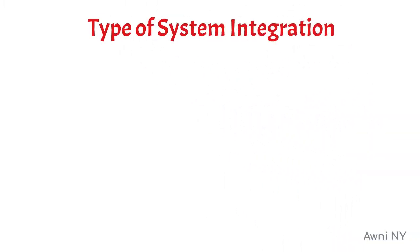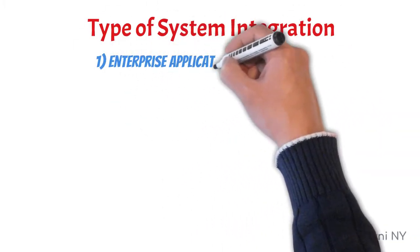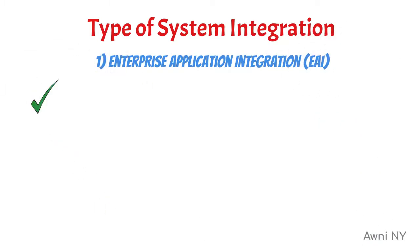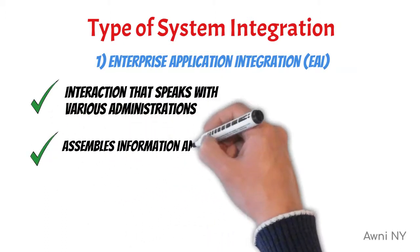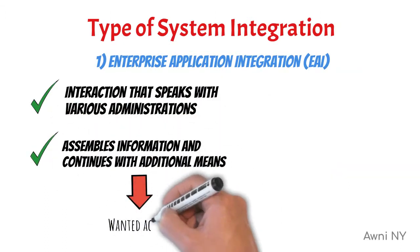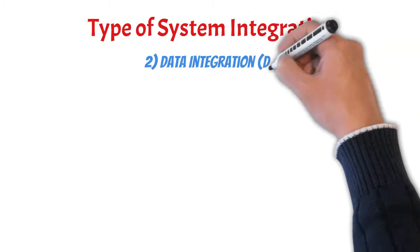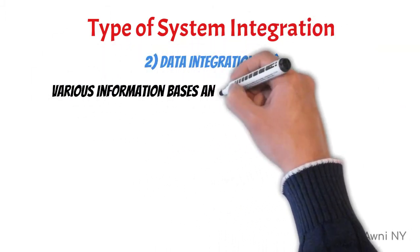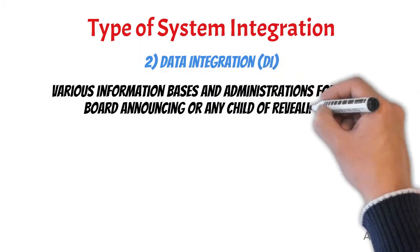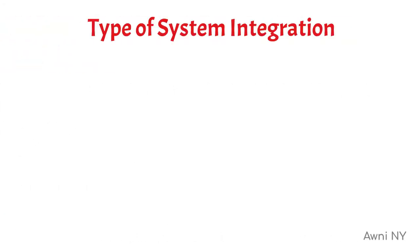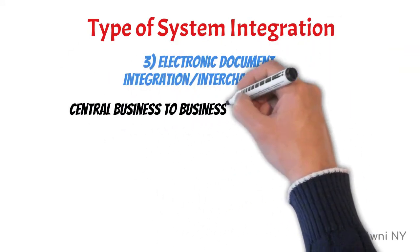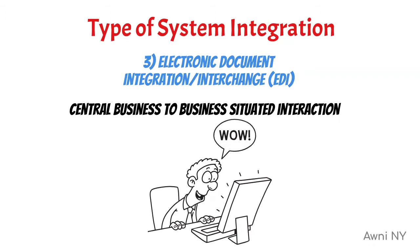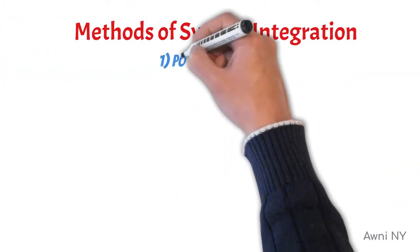Types of system integration: One, Enterprise Application Integration (EAI) — an interaction that speaks with various administrations, assembles information, and afterwards continues with additional means dependent on wanted activity or a workflow. Two, Data Integration (DI) — various information bases and administrations for board reporting or any kind of reporting. Three, Electronic Document Integration or Interchange (EDI) — central business-to-business oriented interaction.